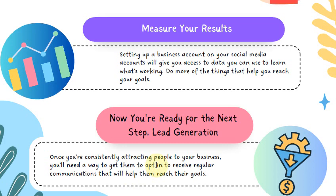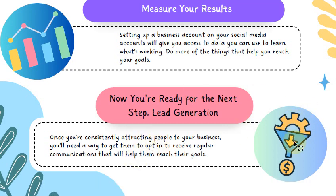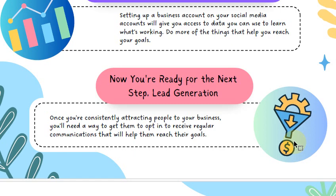Once you're consistently attracting people to your business, you need a way to get them to opt in. When they opt in, they are interested in making a connection with you — that opens the door to start a relationship and limits your need to go out and find people to talk to. When someone opts in, they're saying they want to know more about your business, understand your products, and potentially do business with you. That's your opportunity to give them the information, products, and services they need to accomplish their goals, leading to more sales, referrals, testimonials, and leads.